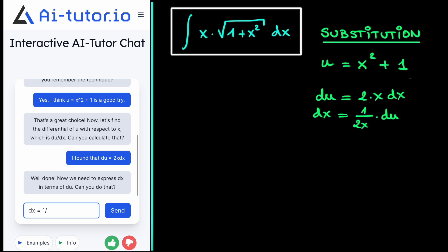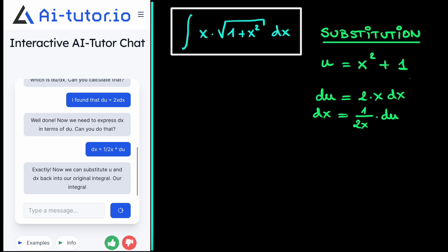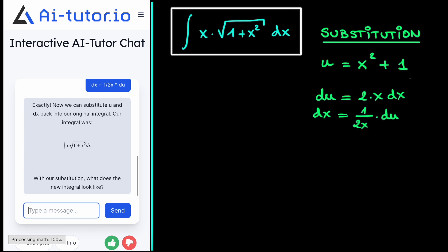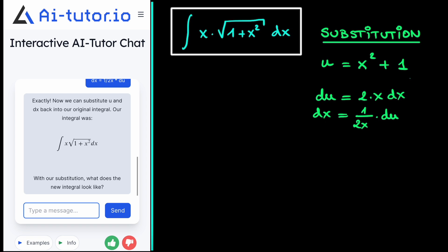Again, checking with our AI tutor, we find that indeed we are on the right track, and we did the right calculations. Then it asks us to now fill in these substitutions, u and dx, into our original integral. And it also gives our original integral. So let's follow its guidance and do just that.